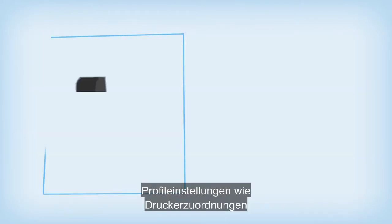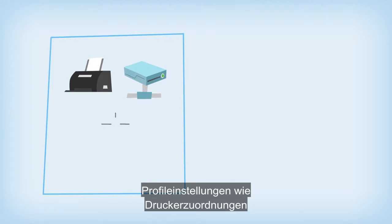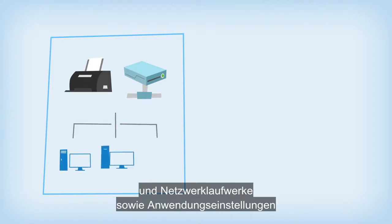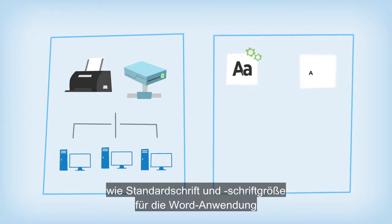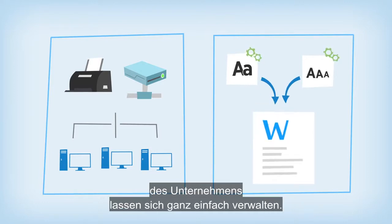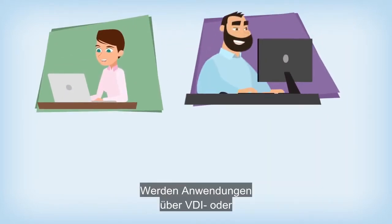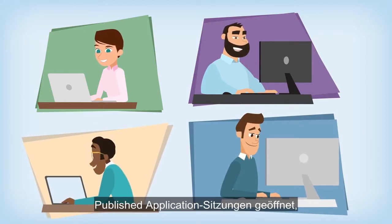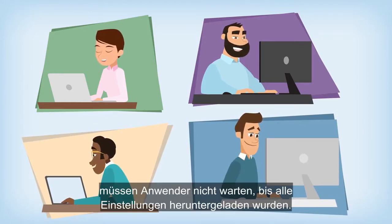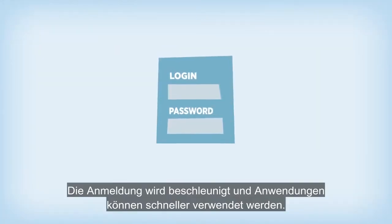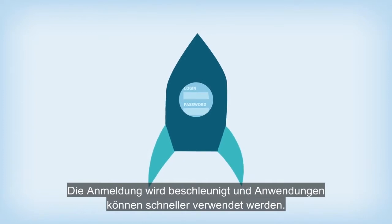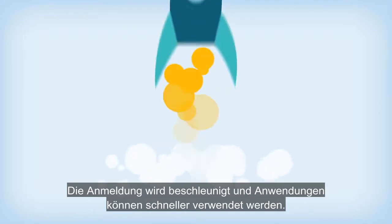Jim can easily manage profile settings like printer mappings and network drives, as well as app settings like default font and font size for the company's word processing app. When users open up apps through their VDI or published app session, there's no need to wait for all the settings to be downloaded, which speeds up the login and app usability process.